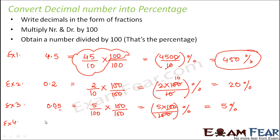The more examples you see, the better the understanding is. So for 2.1, this can be written as 21 by 10. So here also numerator and denominator multiplied by 100. So you get 2100 by 10 percent. So this is equal to 210%.